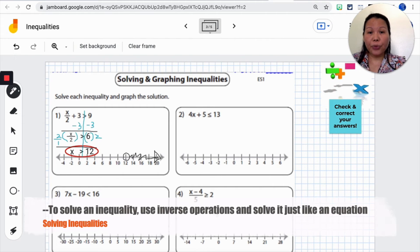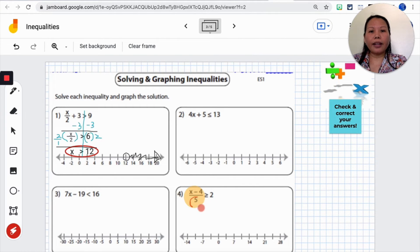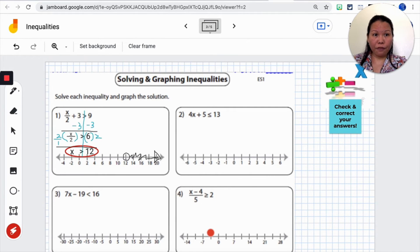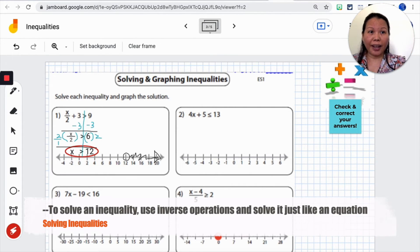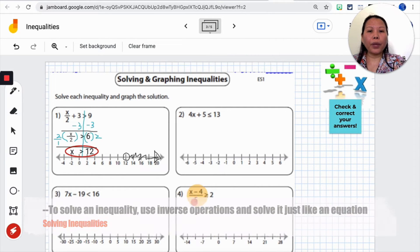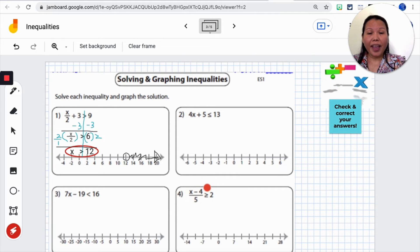We will talk about how you would solve number 4. Get the 5 eliminated first and you do that by multiplying 5 to both sides. And then you are going to eliminate the negative 4 by adding 4 to both sides. And then you are done. Because we are multiplying a positive and because we are adding, we are going to keep the inequality exactly the same.